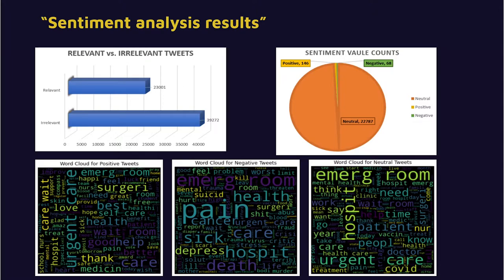Talking about the sentiment analysis on this collected data, we observed that most of the data was irrelevant. There were around 23,000 relevant tweets, and among those, most belonged to the neutral category — as can be seen, most hospitalization-related tweets carry positive or neutral sentiments, since people generally want patients to get well soon.